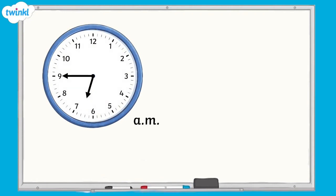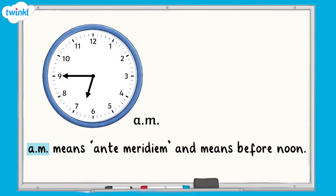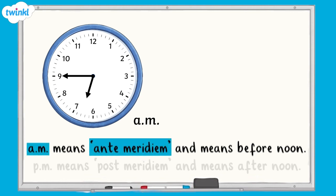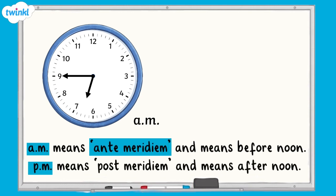Here we have an analogue clock showing an AM time. Remember, AM stands for ante-meridiem and means before noon. PM stands for post-meridiem and means afternoon. This clock shows the time 6.45 AM, which is 6.45 in the morning.